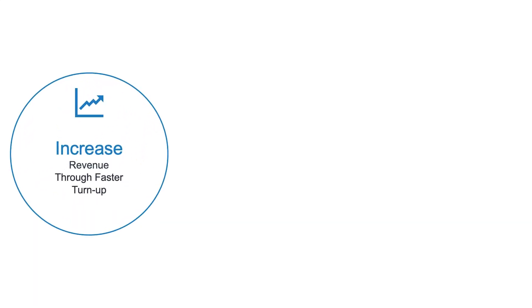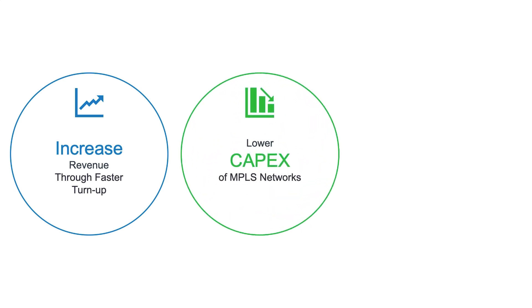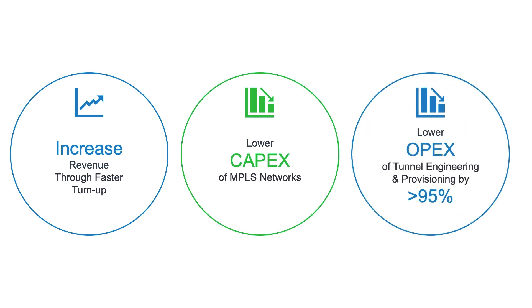Blue Planet MPLS Network Automation allows you to increase revenue by drastically accelerating VPN service turn-up and making new transient on-demand services feasible. Blue Planet Intelligence lowers the CAPEX of MPLS networks through greater efficiency afforded by optimized engineering based on always-accurate IP optical network information. And finally, Blue Planet Automation lowers the OPEX of RSVP-TE and segment routing tunnel engineering and provisioning by greater than 95%.